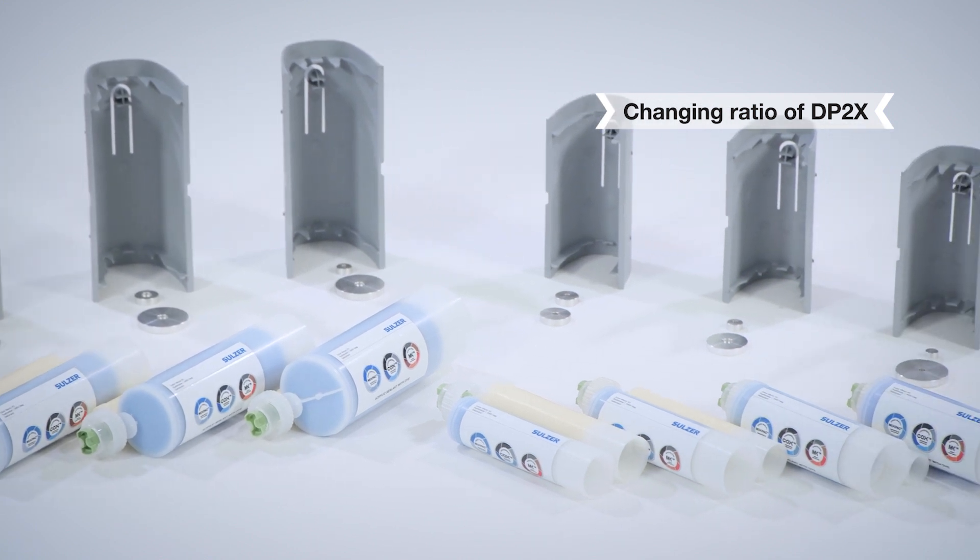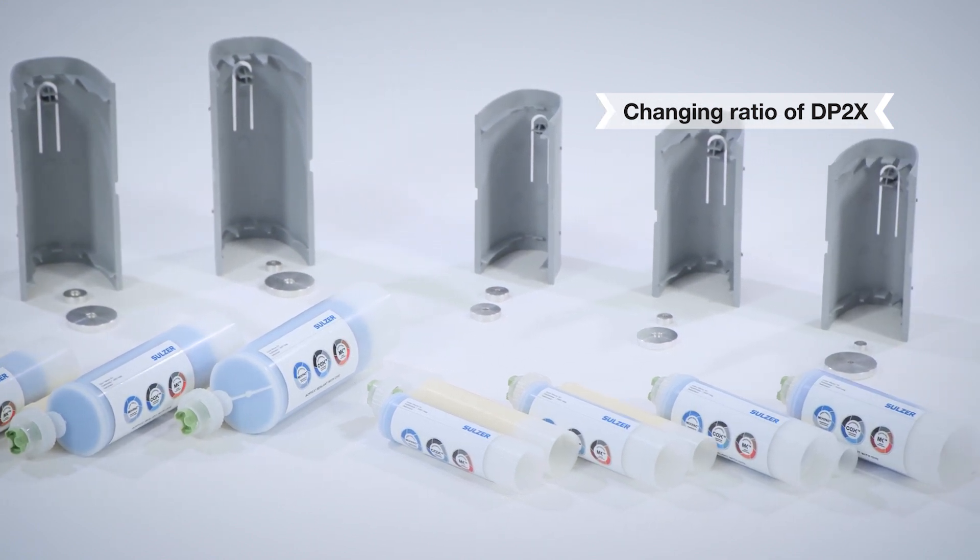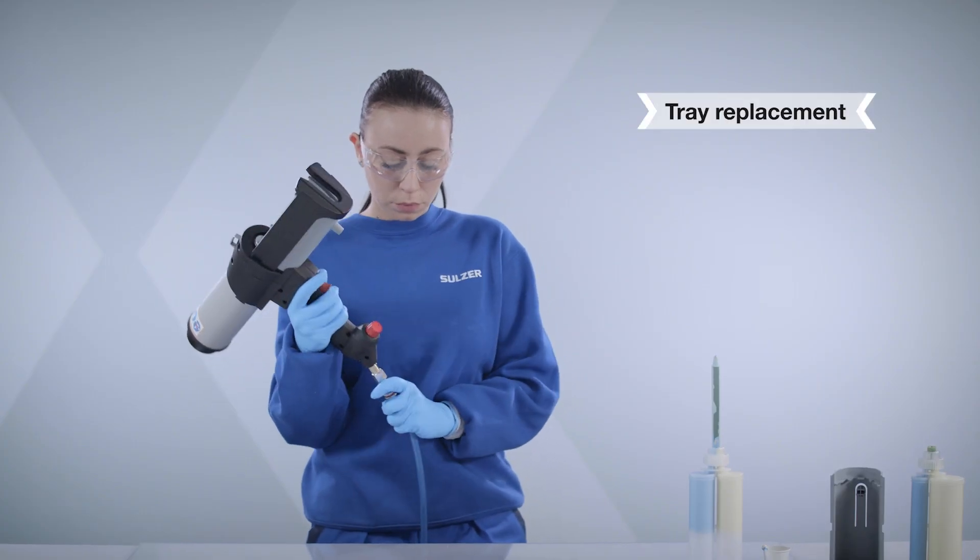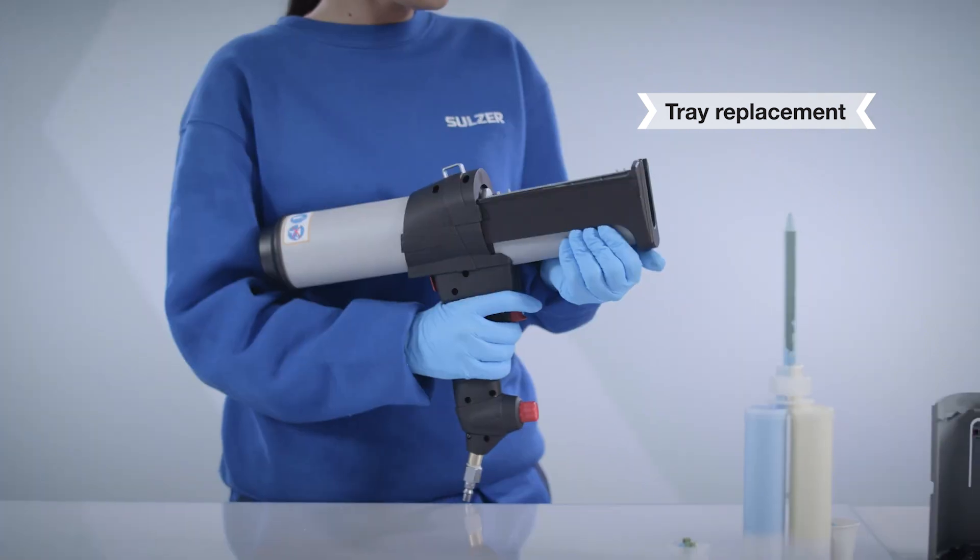The DP2X can handle multiple mixing ratios. You may need to change the installed cartridge tray for a tray with the desired ratio. Always disconnect the air supply first before exchanging the cartridge tray and plunger discs.